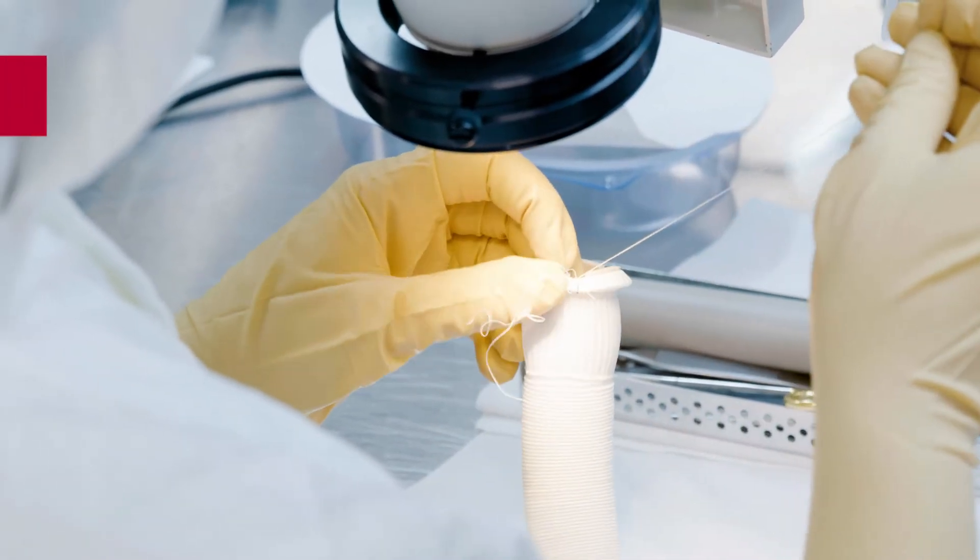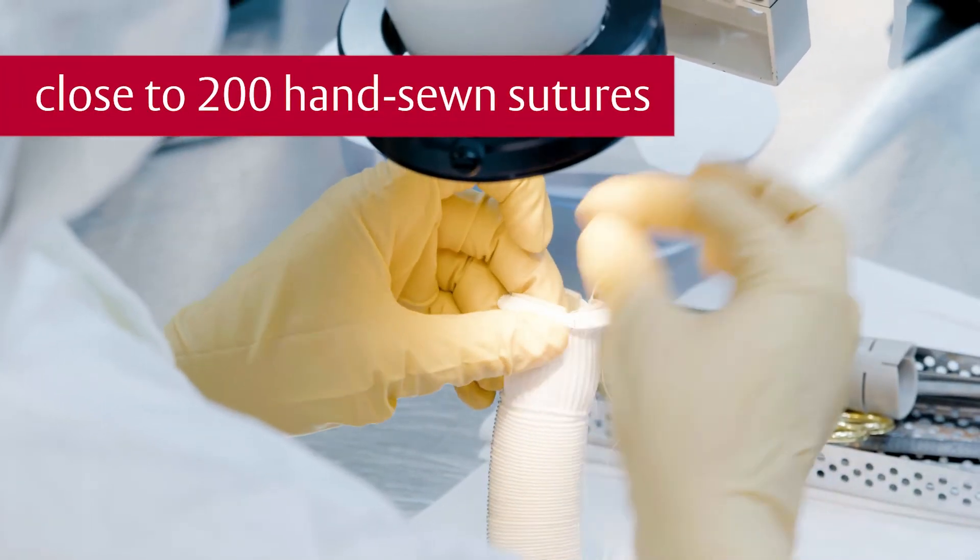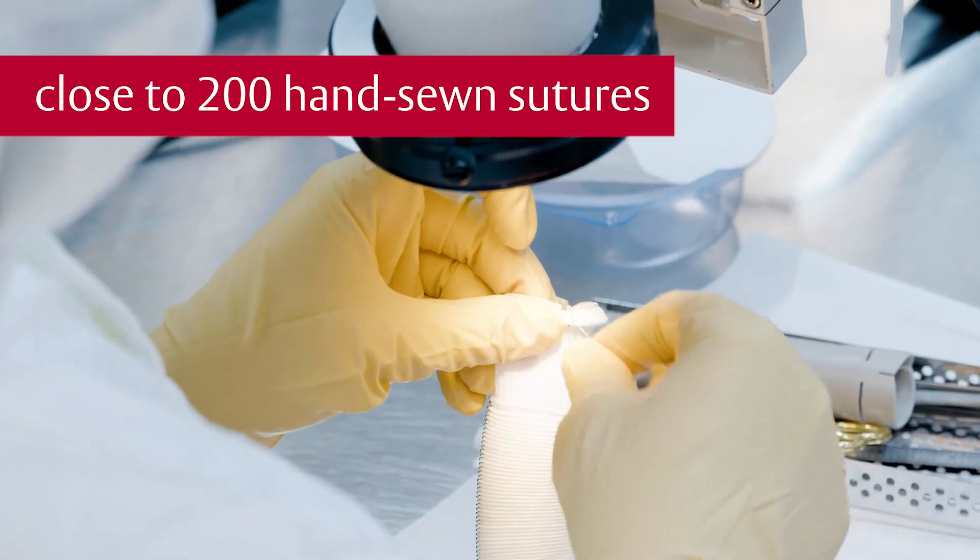Once the valve portion is assembled, it then undergoes multiple functionality tests to ensure proper performance of the valve. The graft to sewing ring attachment is done with close to 200 hand-sewn sutures depending on size. This allows for secure hemostatic connection between the graft and the valve.